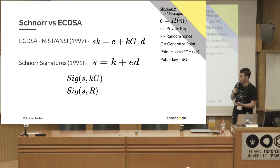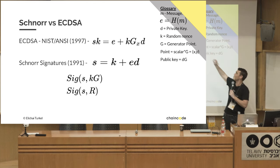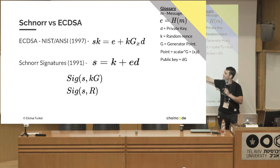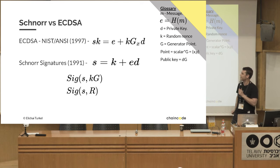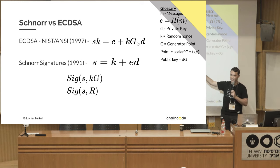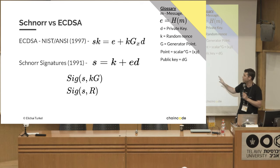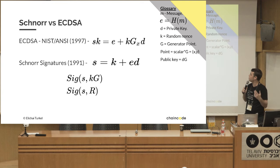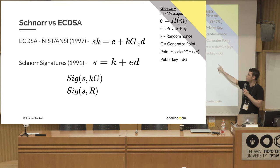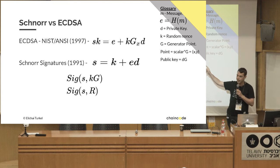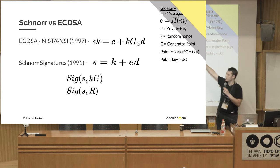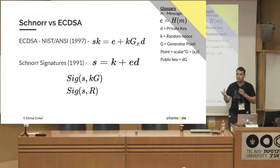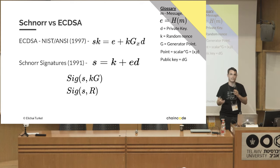The first thing we can see is that Schnorr is simpler. The Schnorr signature is just K plus E times D — very simple. In ECDSA we have K times G, and then you take the x-coordinate of that, which is just weird.